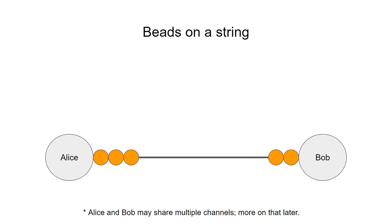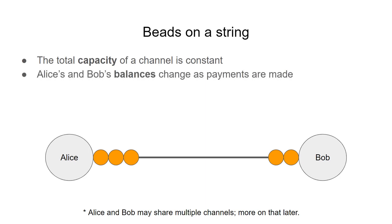If Alice and Bob want to exchange Bitcoins quickly between themselves, they lock some coins into the channel, and the total number of coins that they lock is called the capacity of the channel. The number of coins that Alice and Bob currently have is called their respective balances.